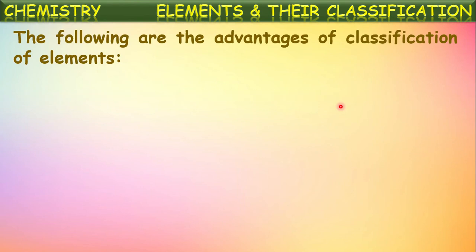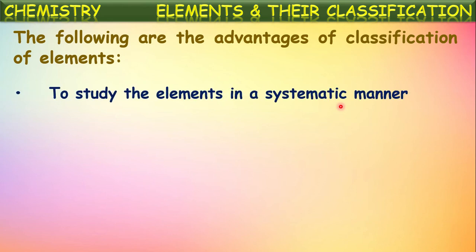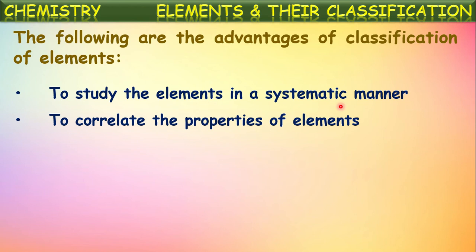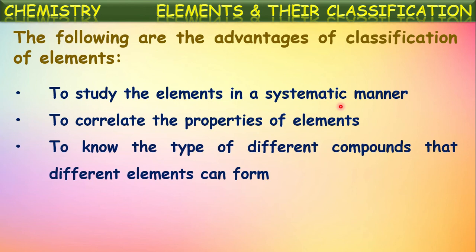Now let us see the advantages of classification of elements. Classification made it easy to study elements in a systematic manner. It helps to correlate the properties of one element with another — elements in the same batch have similar chemical properties. It also helps to know the types of different compounds that different elements can form.